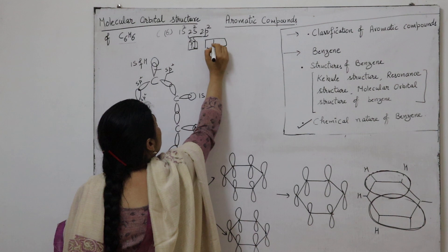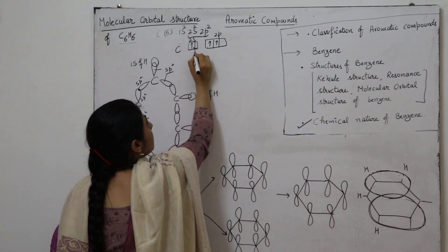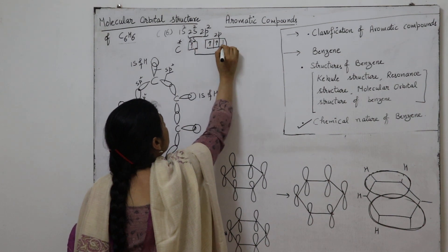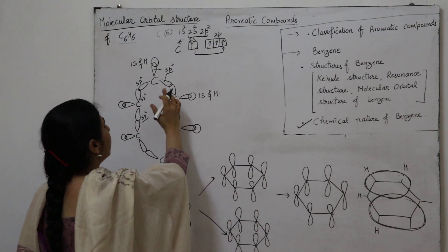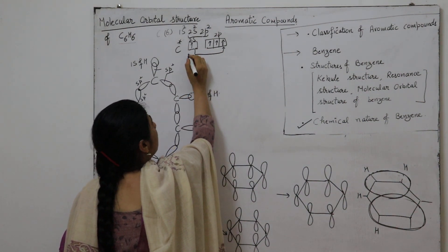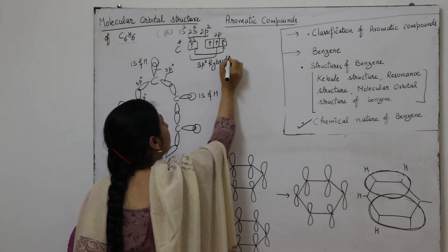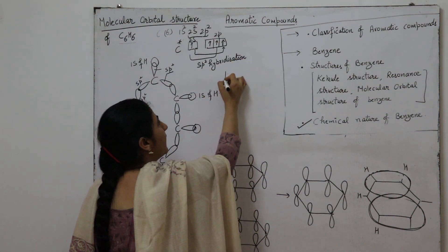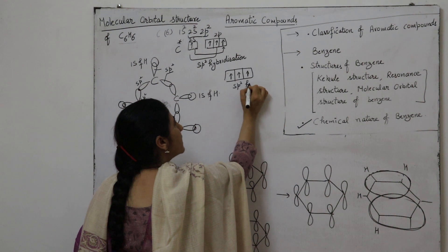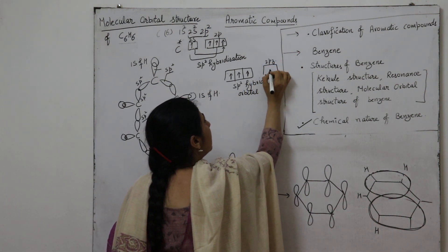In the excited state, one of the 2s electrons of carbon jumps to the 2p orbital. After excitation, in benzene each carbon forms 3 sigma bonds, so we require 3 orbitals of carbon. Due to this requirement of 3 orbitals, carbon undergoes sp2 hybridization. Due to sp2 hybridization, we get 3 sp2 hybrid orbitals of carbon, and one orbital — the 2pz — remains unhybridized. sp2 hybrid orbitals adopt a triangular planar shape.